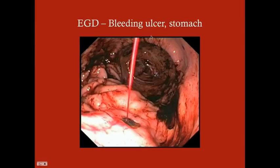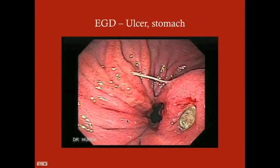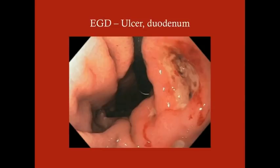Here's an EGD showing a bleeding ulcer. You can see the coffee ground material — look how dark that blood is, which is what you would see when suctioning through the NG tube. This area shows bright red blood coming directly out of the ulcer. Here's another ulcer — this one appears healed or possibly coagulated. And here's an ulcer in the duodenum, so you definitely want to check there too.